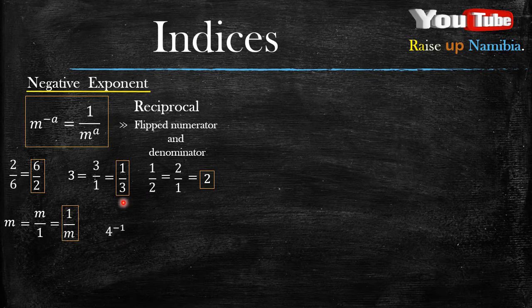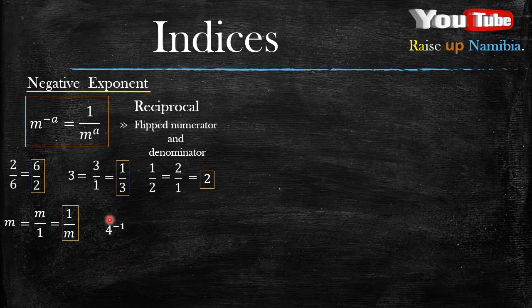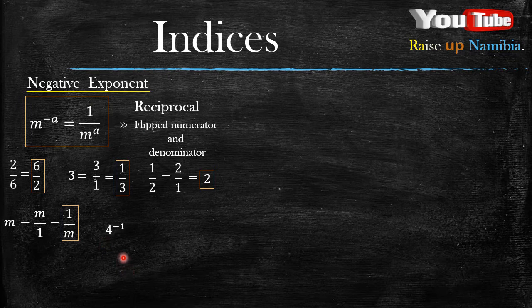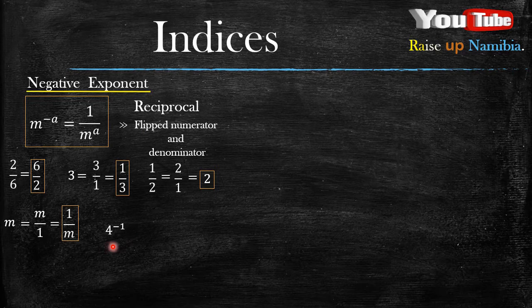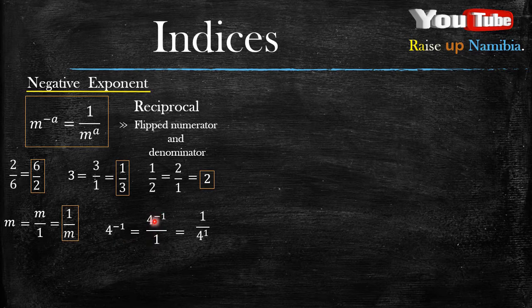Now that you know that, let's get to the law. The negative exponent law of indices. Now, how about when you have 4 raised to the power of negative 1. This basically is the same as this 2. So what do you do? You put this over 1 to be a fraction.